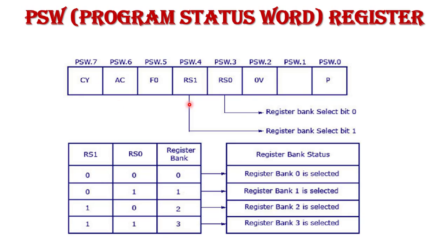Out of these 8 bits, 4 are flag bits: the Carry Flag, Auxiliary Carry Flag, Overflow Flag, and Parity Flag. These 4 are conditional flags, meaning they indicate some condition about the result after an instruction is executed.